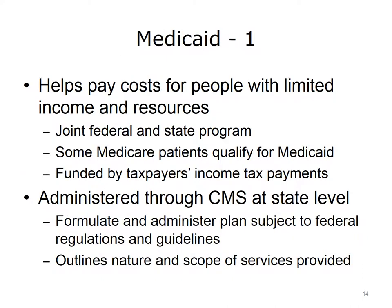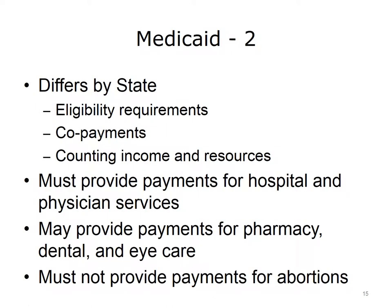Another program jointly administered by the federal government through CMS and the states is Medicaid. It helps pay medical costs for people with limited income and resources. Some people qualify for both Medicare and Medicaid. Medicaid is funded by taxpayers' income tax payments. States are not required to offer Medicaid, although all 50 states now have a program. Each state formulates and administers its own Medicaid plan, subject to federal regulations and guidelines. Each state outlines the nature and scope of services to be provided, then selects vendors to provide those services. Medicaid programs vary from state to state, each having different eligibility requirements and copayments. The rules for counting income and resources also vary from state to state and group to group; however, some rules are mandated by the federal government.